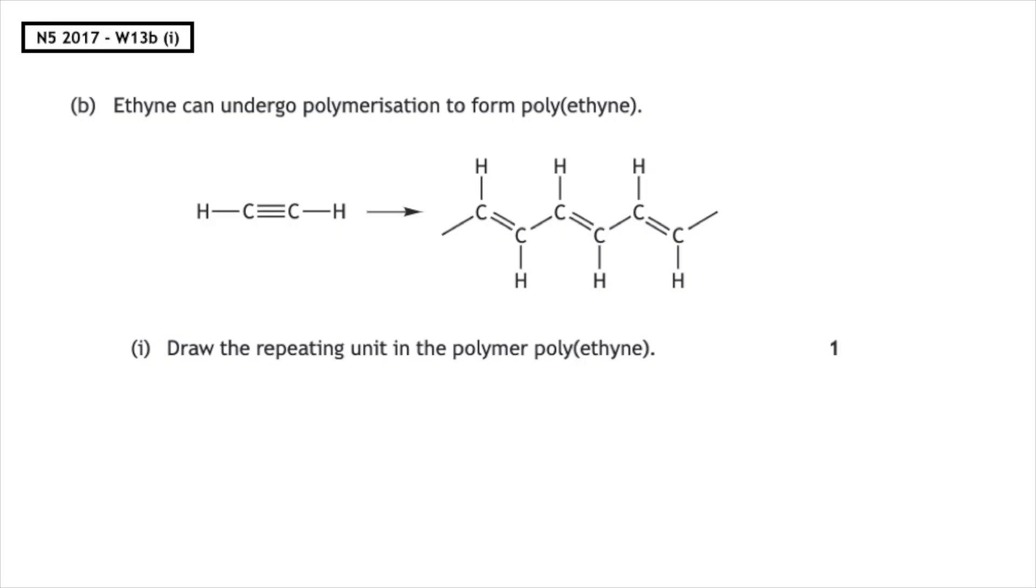So remember, every two carbons, we break the bonds. For the repeating unit, the bonds must be open. So what we have is C double bond C, with each carbon having a hydrogen.